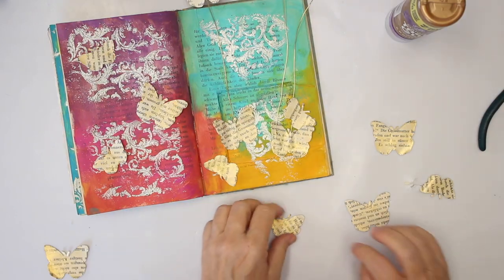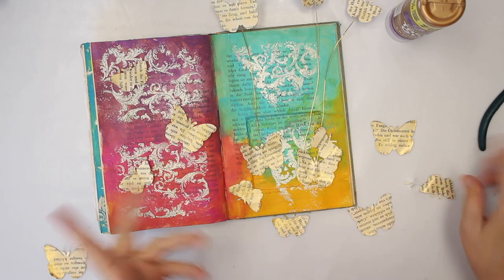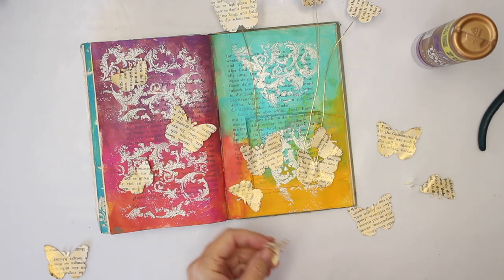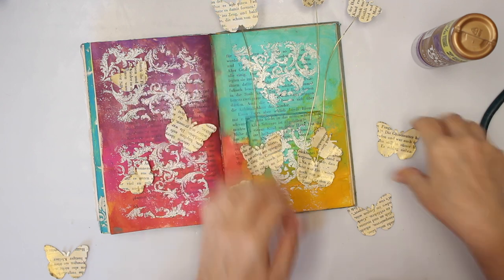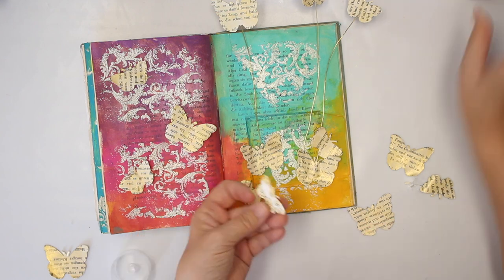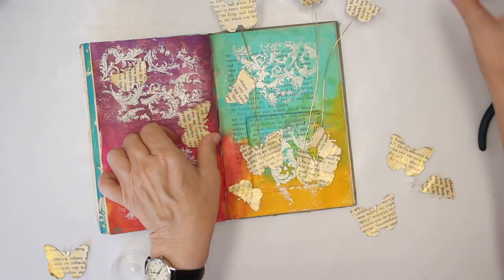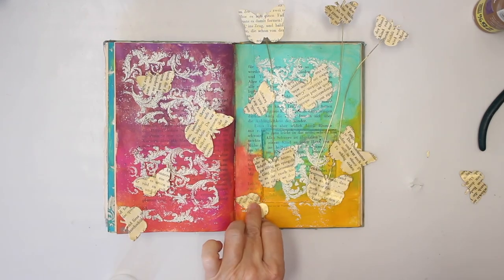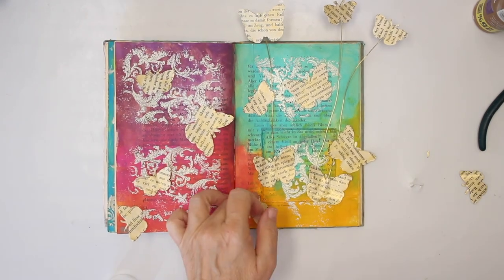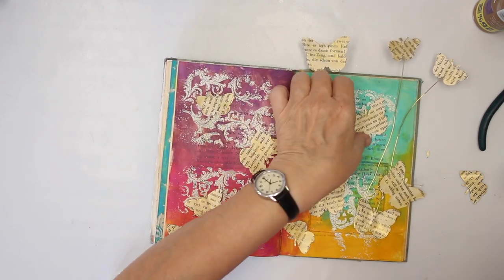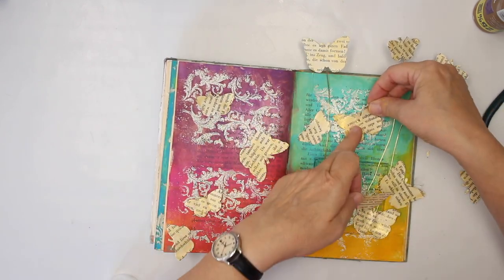Now to glue down the rest of the butterflies, I use tacky glue. I don't need the hot glue. And as you can see, I don't fully glue them down. I think that's okay.